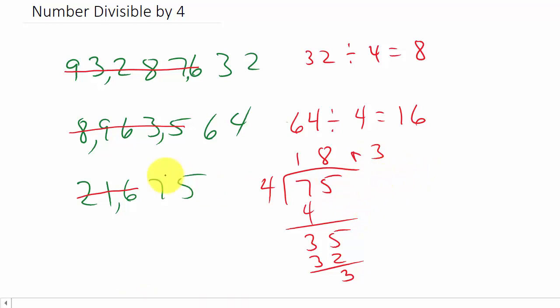So, since 4 does not go into the last two digits evenly, 4 does not divide into the number evenly.